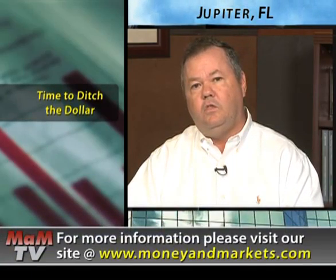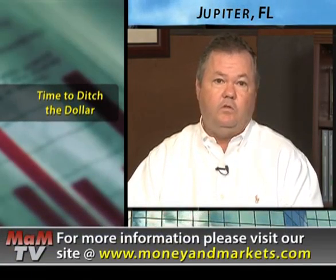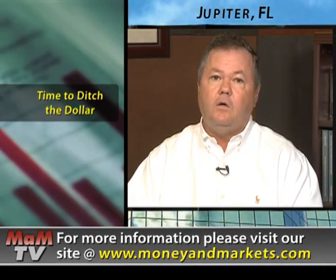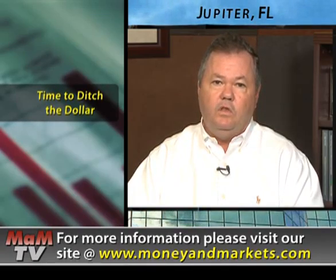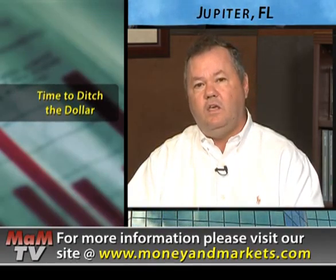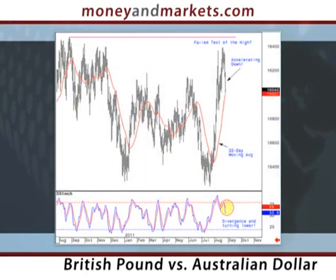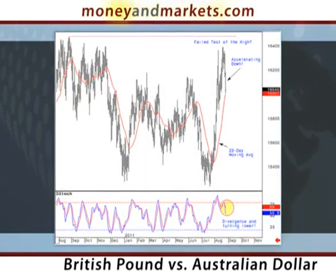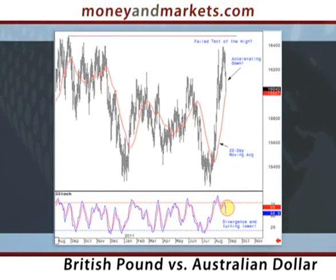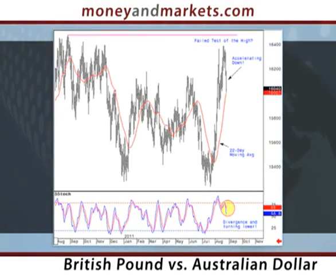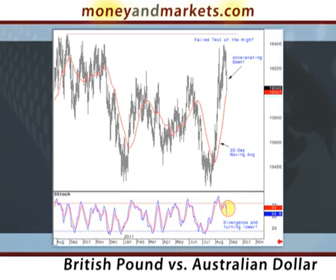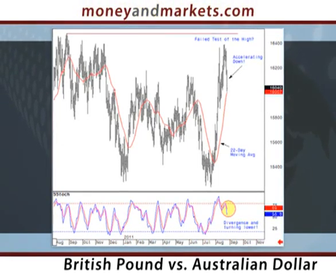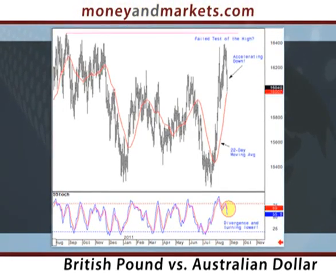Canada also has a yield advantage over the UK because its short-term interest rates are higher. And I believe the Bank of England will initiate another round of quantitative easing, which will increase the yield advantage on Canadian dollar deposits even more. In this chart, you can see that the pound recently tested its high against the Canadian dollar and it failed. Now it's about to cross below the 22-day moving average, which in the past has provided great support and resistance levels.